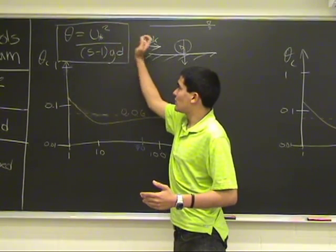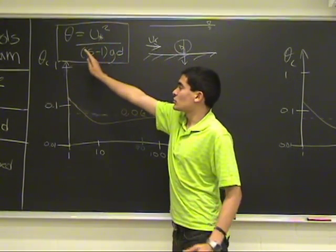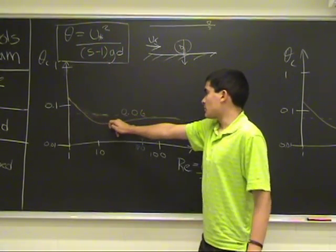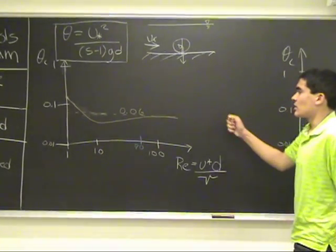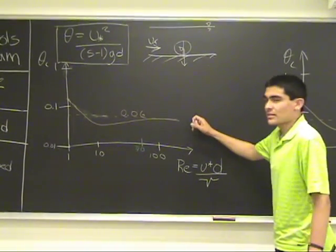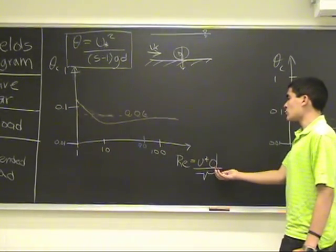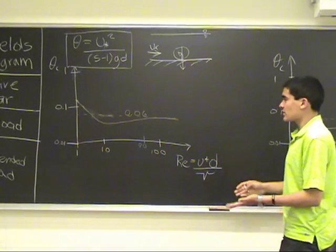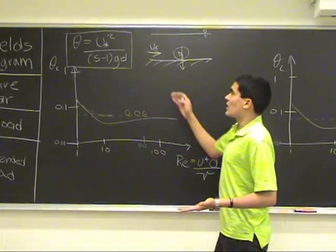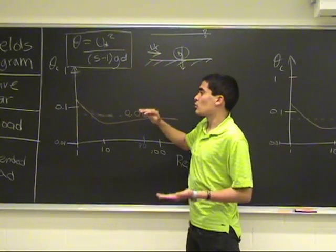He plotted the value of the shields parameter that depicted the threshold of movement. So he calculated the Reynolds number for the situation present and calculated at what shields parameter would be movement.